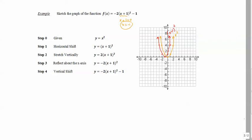Step 2: graph y = 2(x + 1)². We take the red graph and multiply every y-value by 2, stretching it vertically by a factor of 2. The vertex stays at 0; the point where y was 1 becomes 2, and where y was 4 becomes 8. The resulting green graph is 2(x + 1)².